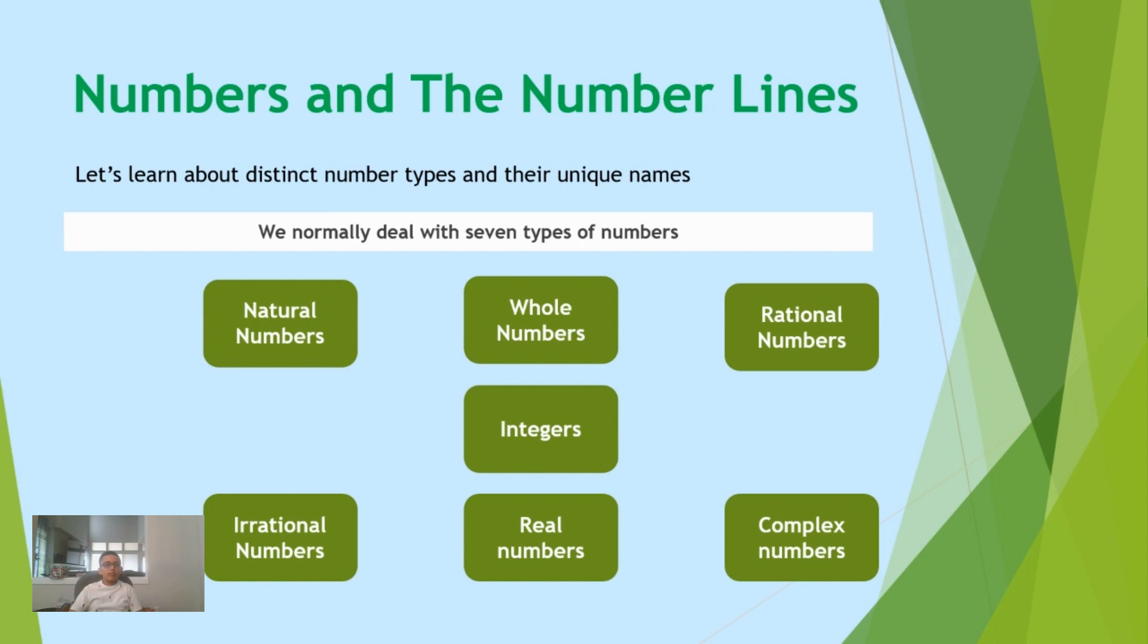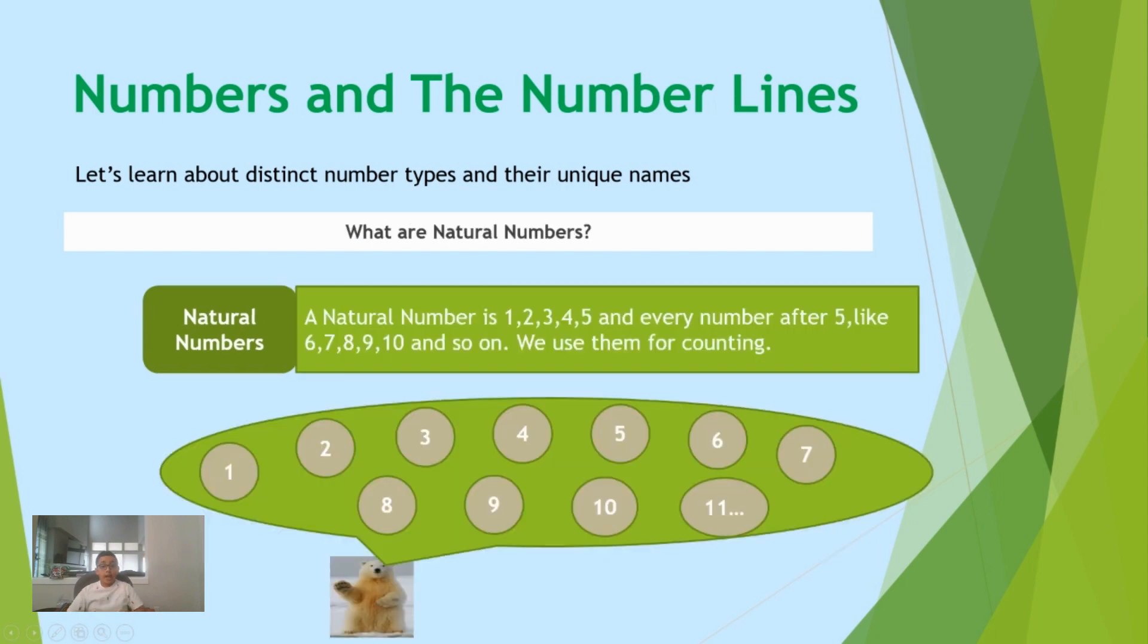And namely they are: natural numbers, whole numbers, rational numbers, integers, irrational numbers, real numbers, and complex numbers.